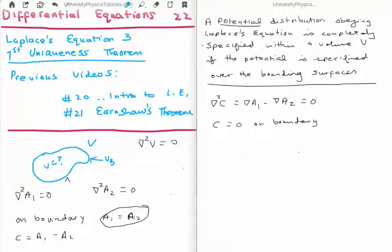Next, we know that C cannot have a local maximum or local minimum. And that's because that's one of the properties of Laplace's equation. So in the volume here, we cannot have any local maxima or any local minima.